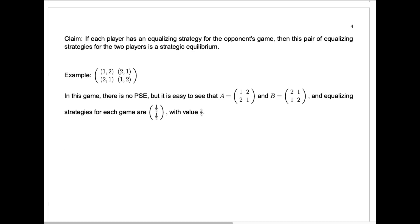How do we find mixed strategic equilibria? In general this is by no means as easy as finding pure strategic equilibria. But here's one way: if we happen to be in a situation where each player has an equalizing strategy for the opponent's game — recalling that in a two-player general sum game we can split it into player one's game and player two's game by looking at the first and second components of each entry respectively — then this pair of equalizing strategies is in fact a strategic equilibrium.